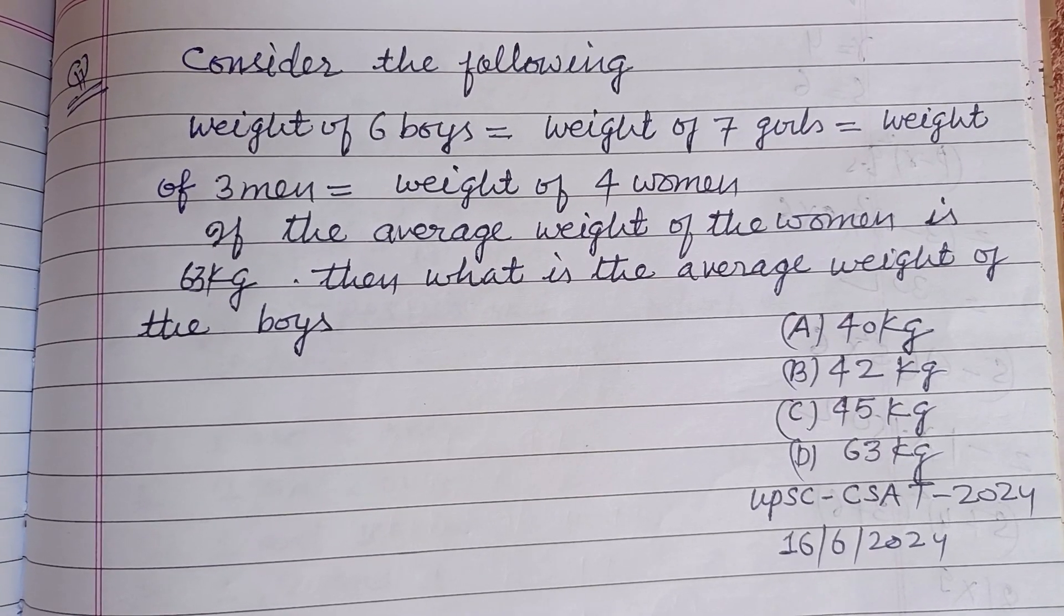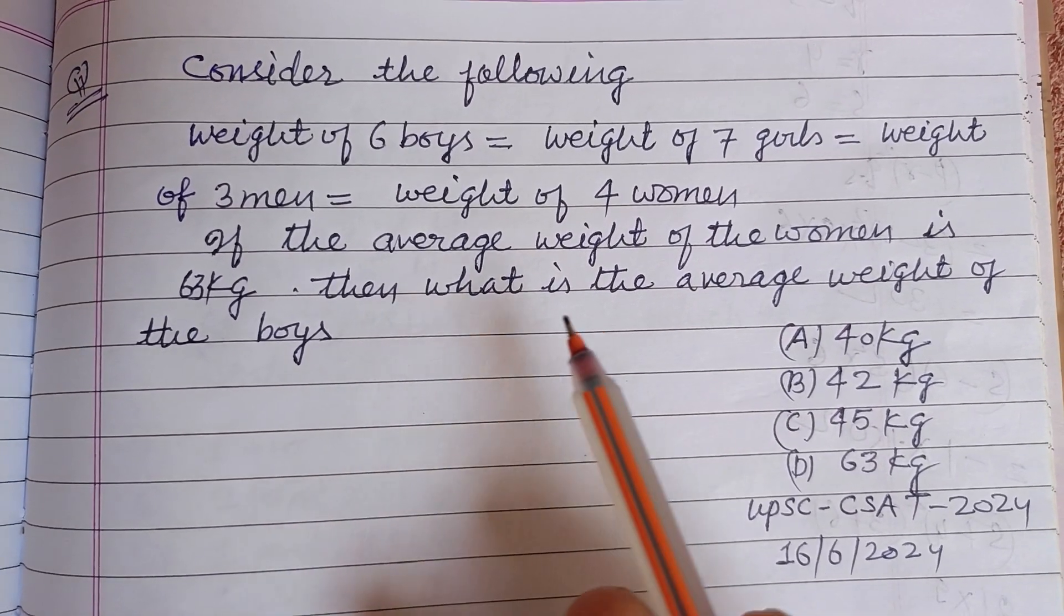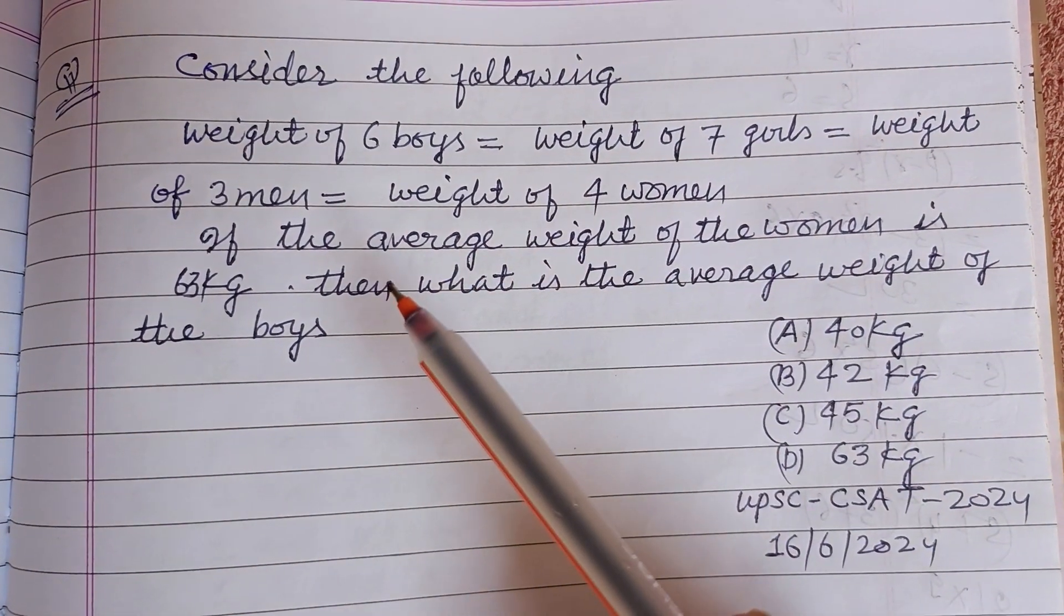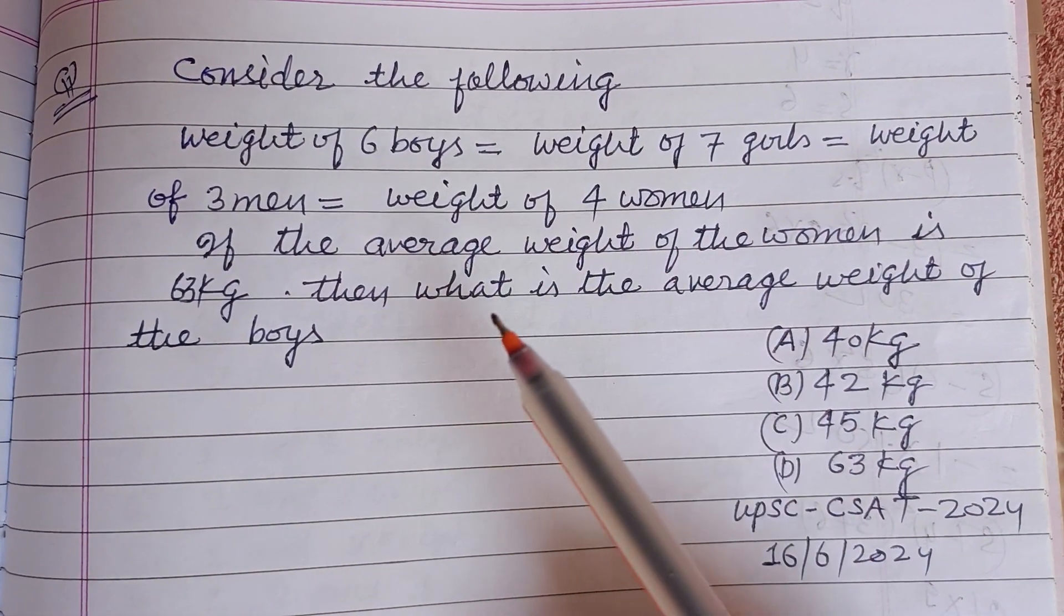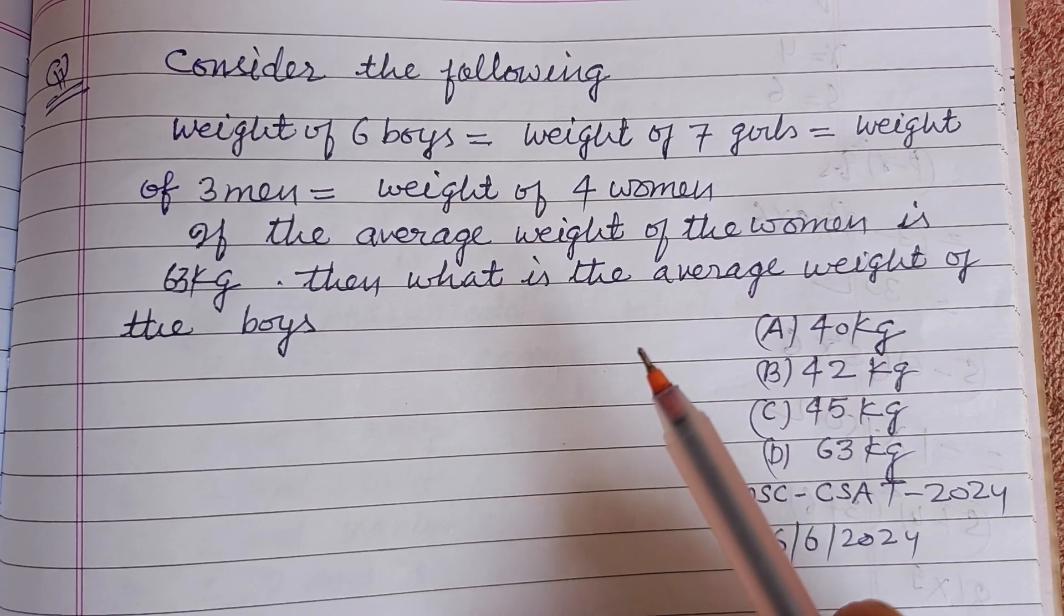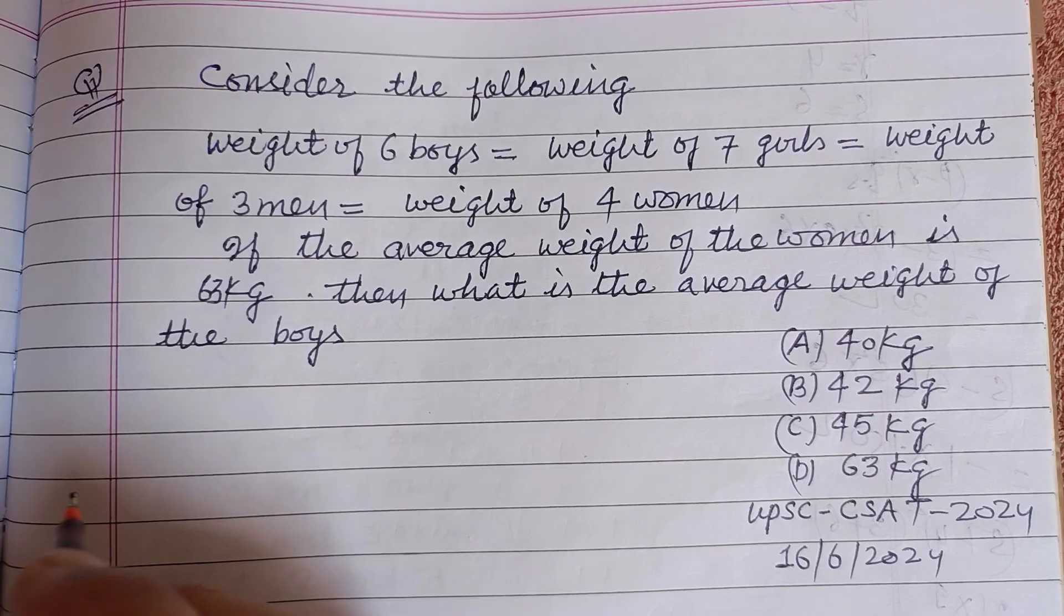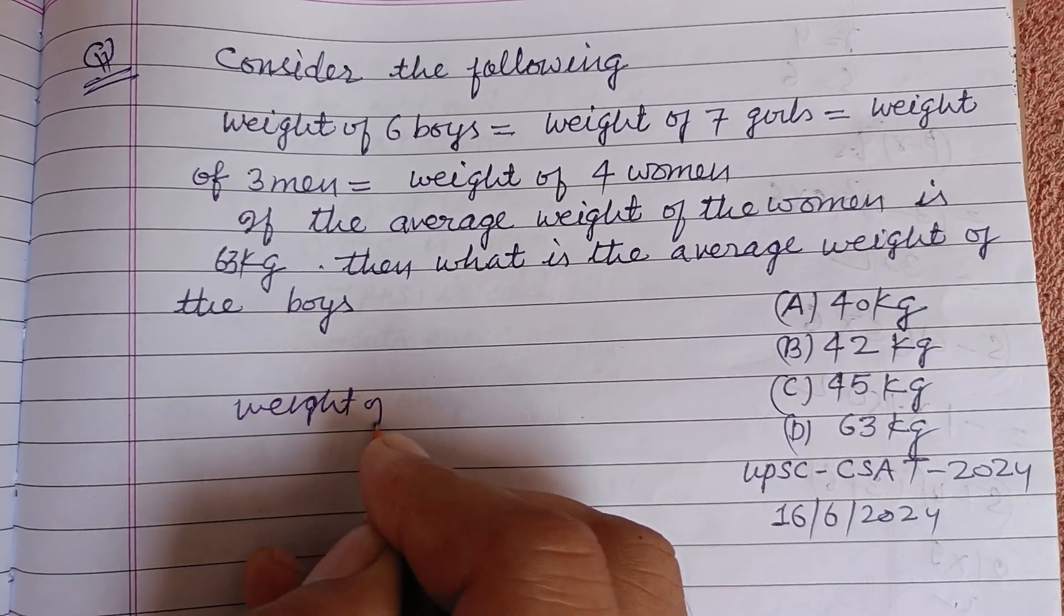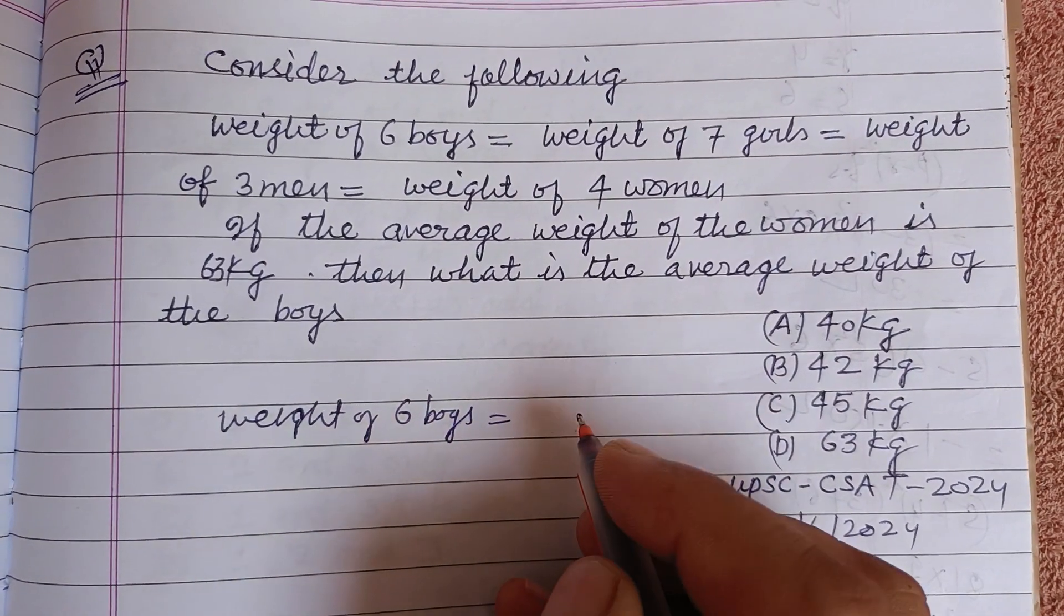Hello viewers, warm welcome to this YouTube channel. Consider the following: weight of six boys equals weight of seven girls equals weight of three men equals weight of four women. If the average weight of the woman is 63 kilogram, what is the average weight of the boys? So, weight of six boys equals weight of four women.